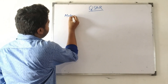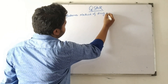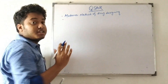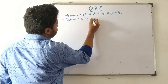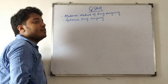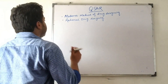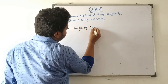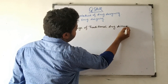QSAR has got special emphasis because it is a modern method of drug design and is generally a rational drug designing method. This rational drug designing approach has been utilized to overcome the several disadvantages of the traditional drug discovery process.